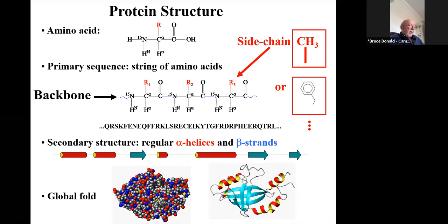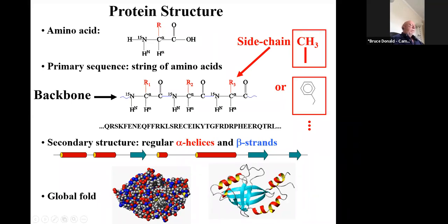What are we doing in protein design? You can think of protein structure prediction as going from the top to the bottom of the page — we have a sequence of amino acids, we want to predict the structure, and the structure is important for function. Protein design is, in some sense, the inverse: we start with the desired structure and ask what set of amino acids will fold up into that structure.